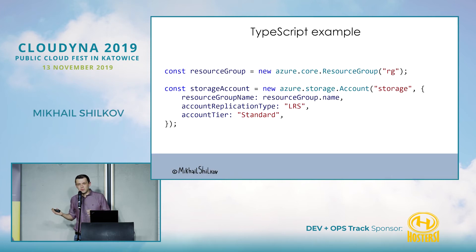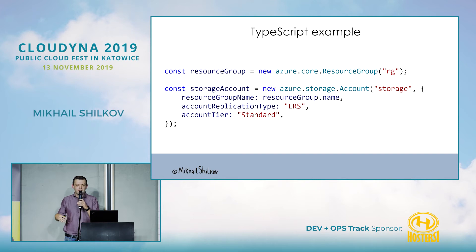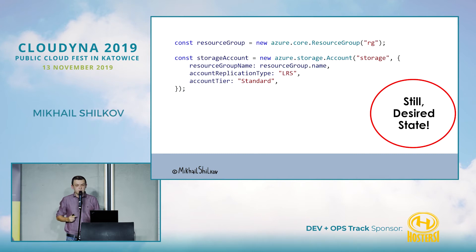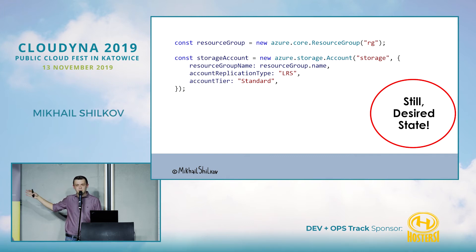A TypeScript example looks like this: it's an Azure program that defines a resource group — just a new object assigned to a variable — and then that variable is used to define a second resource, a storage account. Just by using the first variable in the definition of the second one, that creates an implicit dependency between those two resources. Importantly, this is still desired state — it's different from the SDK approach. When Pulumi executes this code, it doesn't create any resources yet; it just creates a definition of the graph.